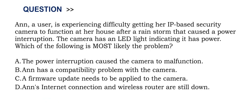Option A: The power interruption caused the camera to malfunction. Option B: N has a compatibility problem with the camera. Option C: A firmware update needs to be applied to the camera. Option D: N's internet connection and wireless router are still down.